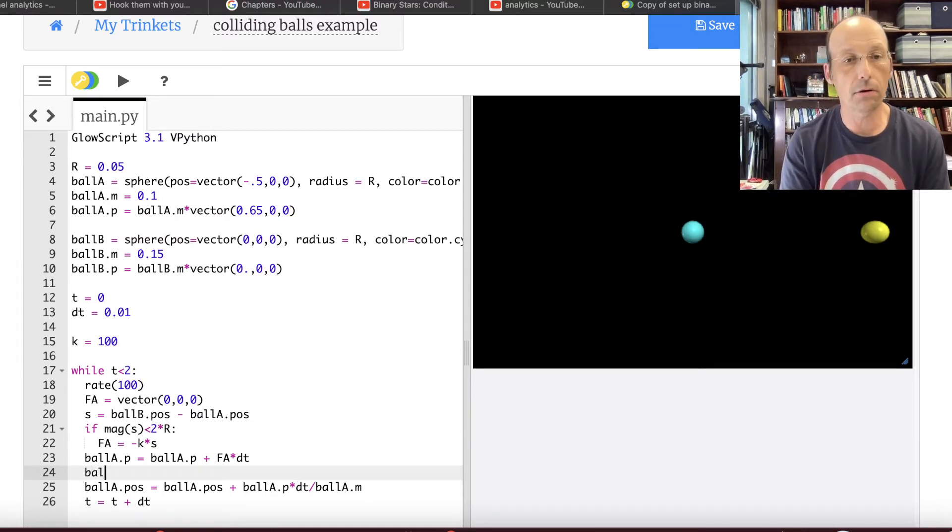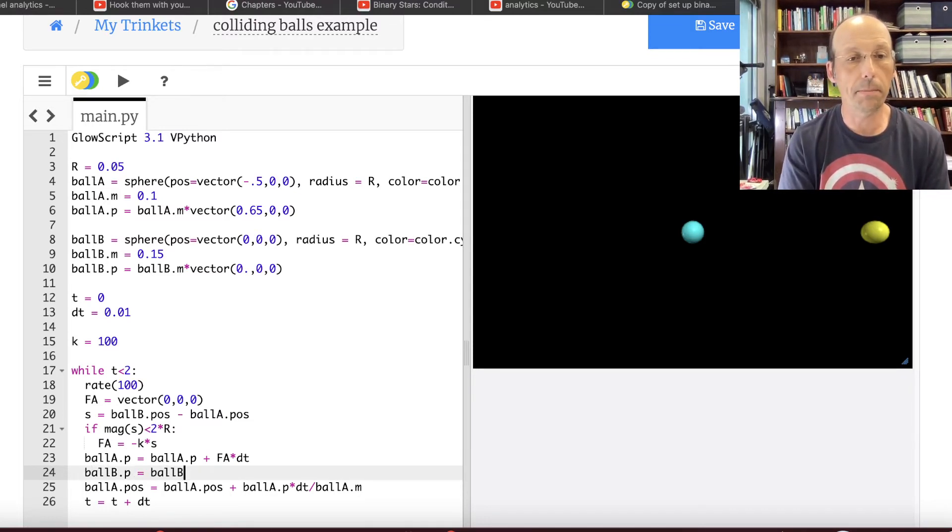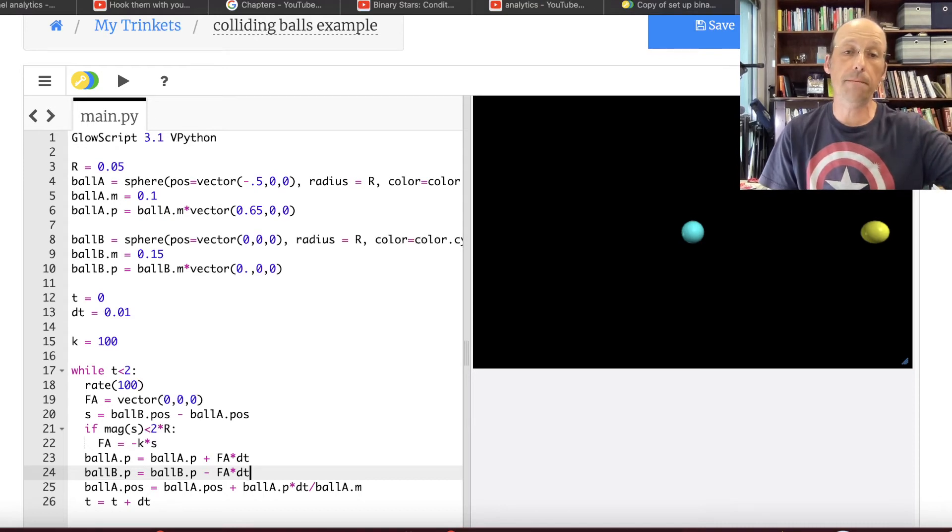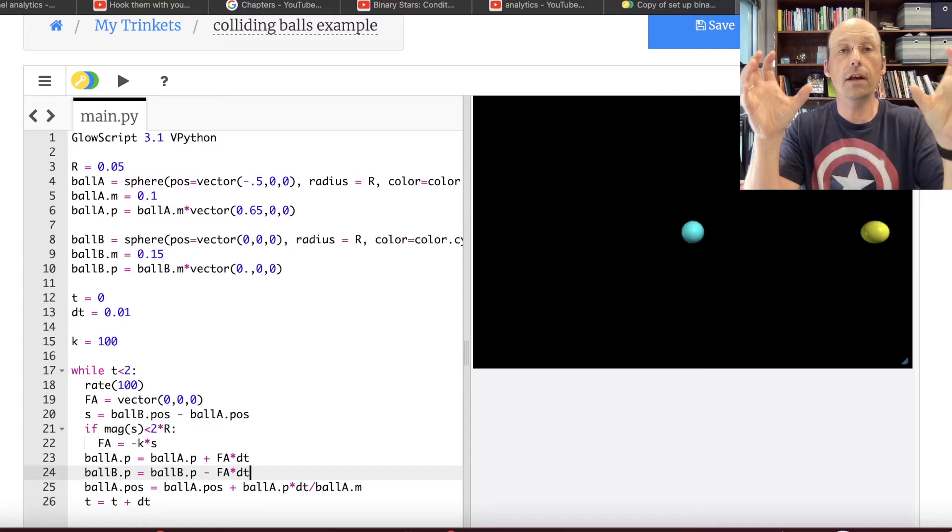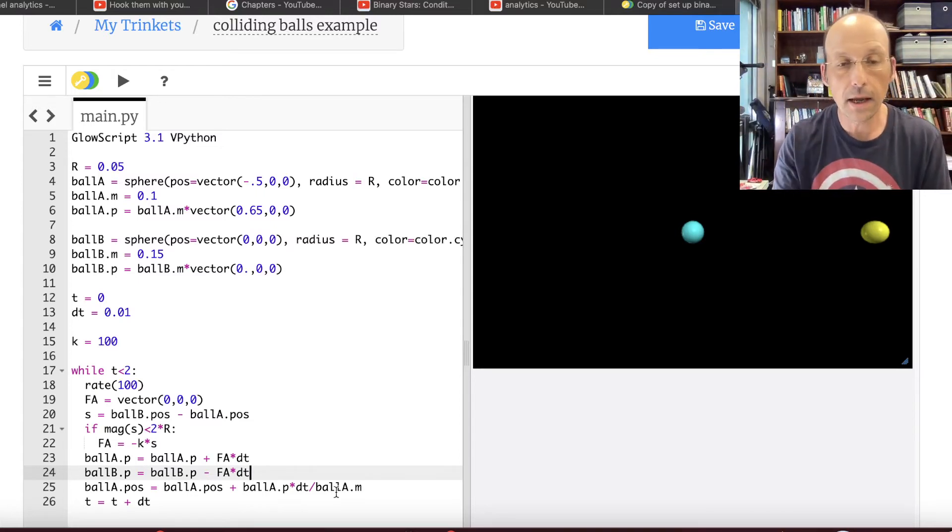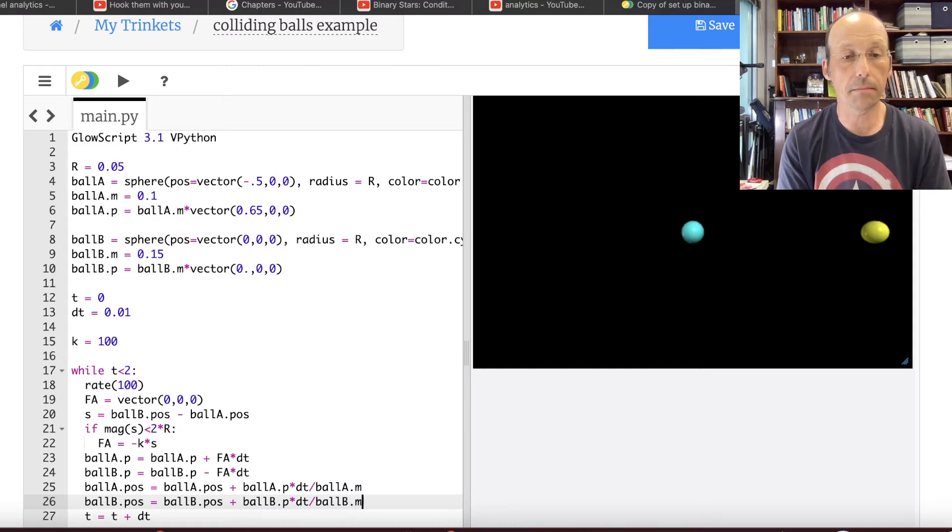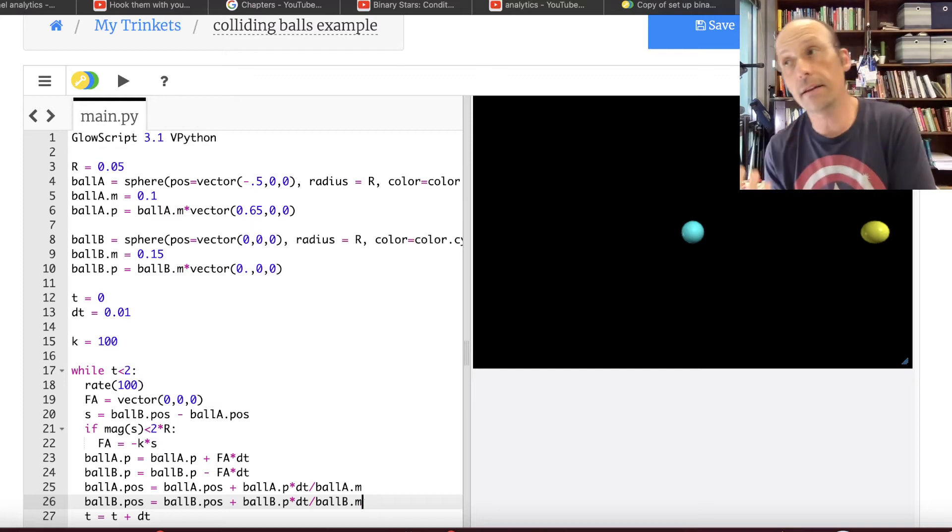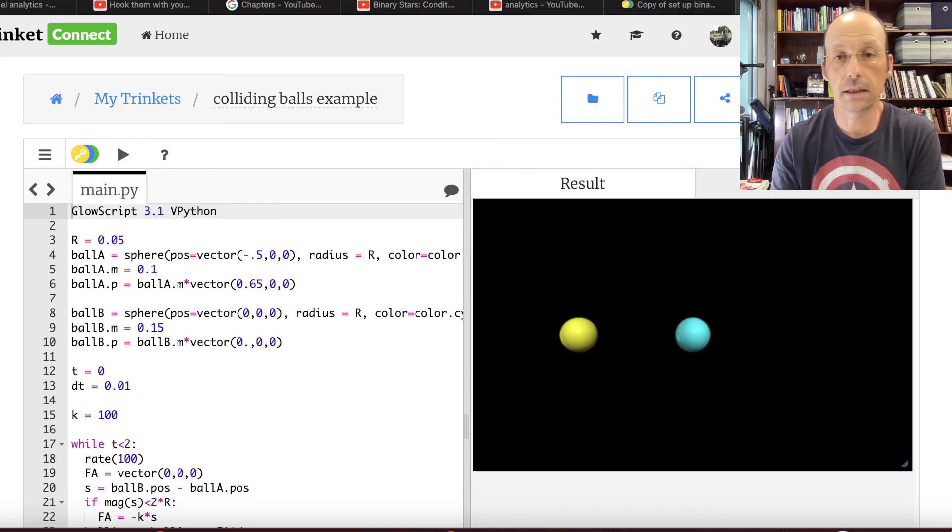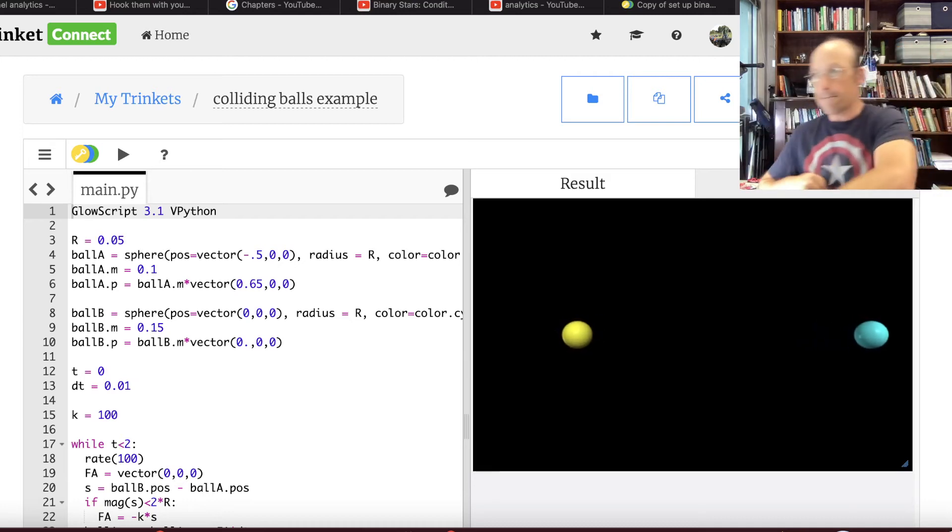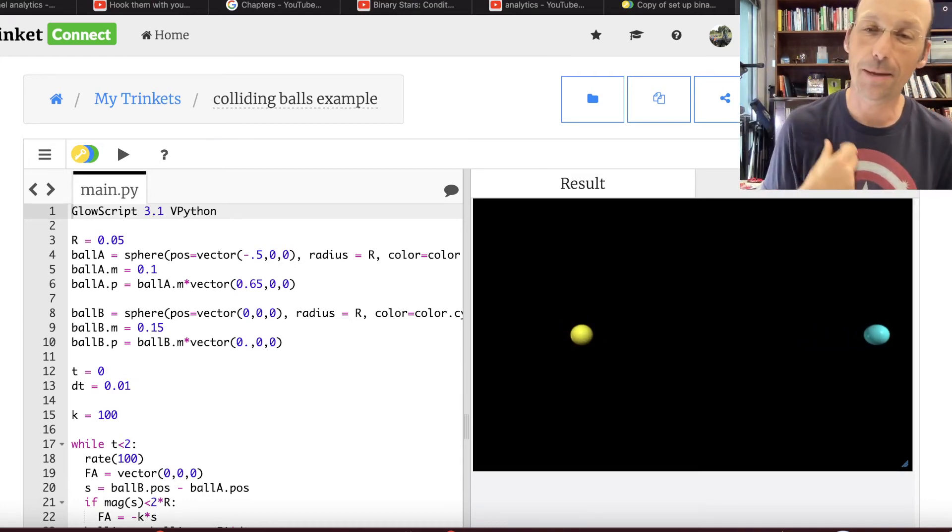But now I need to update ball B, too. So ball B.P equals ball B.P minus F A times DT. So F A is the force on A. The force on B is the opposite of that because forces come in pairs. For every force, there's an equal and opposite force. Now I need to update the position of ball B. Ball B.P equals ball B.P plus ball B.P times DT divided by ball B.M. And that should work unless I got my minus sign wrong. And then things are going to be bad. So let's just save that and run it. And it worked. I'm kind of happy. But did it really work?